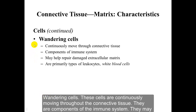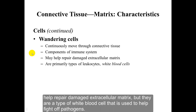Wandering cells are continuously moving throughout the connective tissue. They are components of the immune system. They may help repair damaged extracellular matrix, but they are a type of white blood cell used to help fight off pathogens.